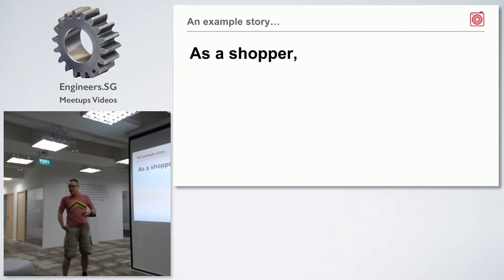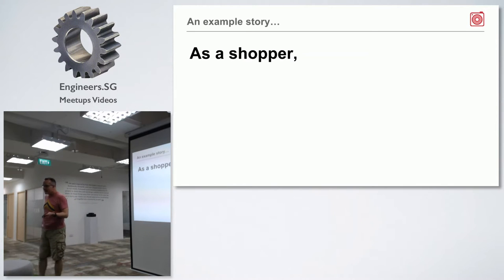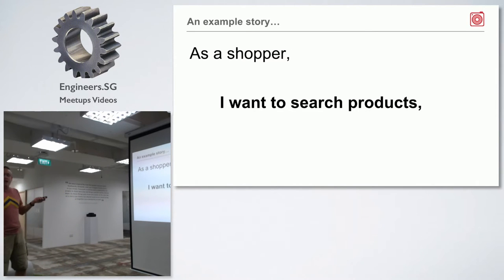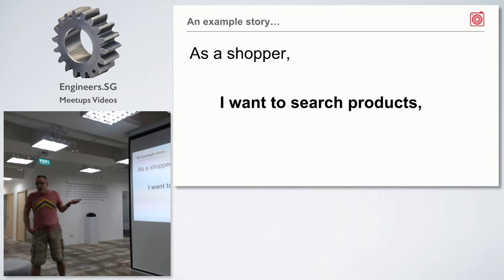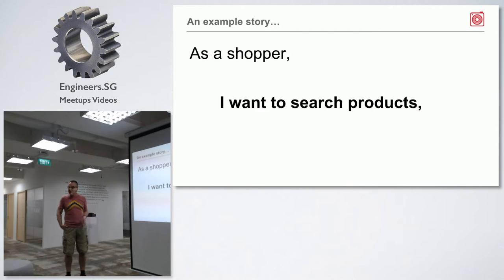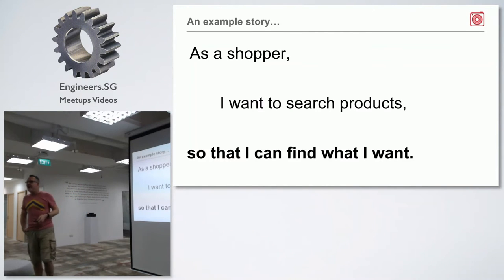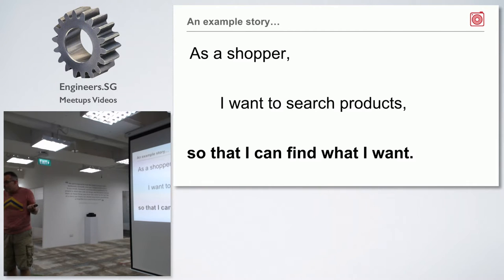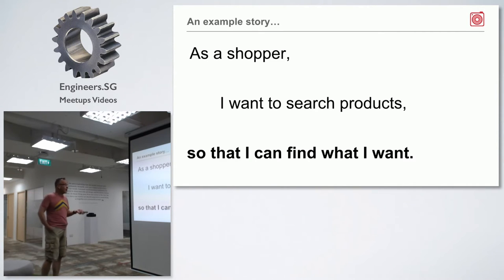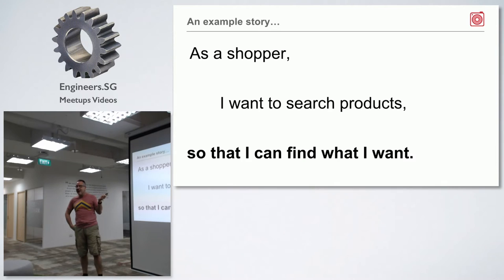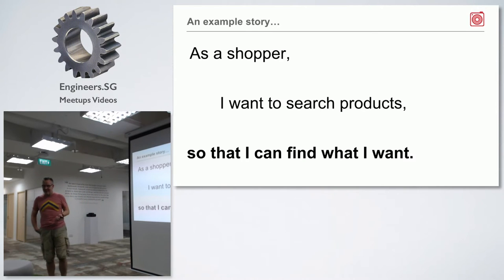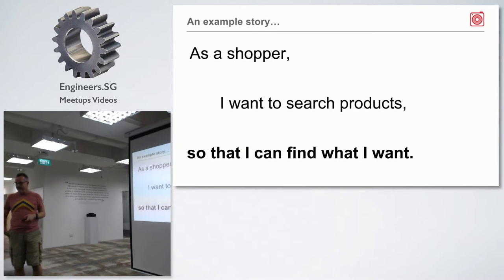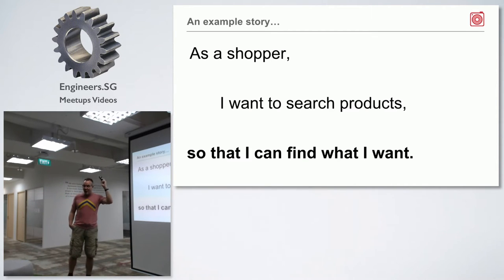Let's walk through a concrete example. As a shopper — so we're dealing with some kind of e-commerce site — I want to search products, so that I can find what I want. That's a very simple user story. Now, this is a very high level user story. When you start off with this, this is the kind of story that then needs to be broken down, because this is really big.